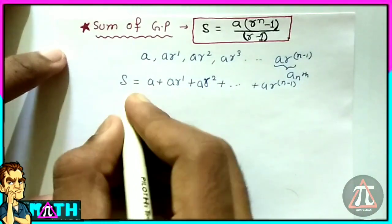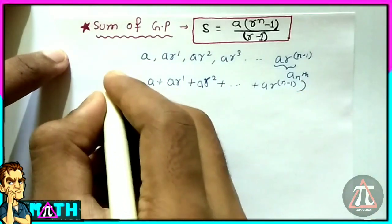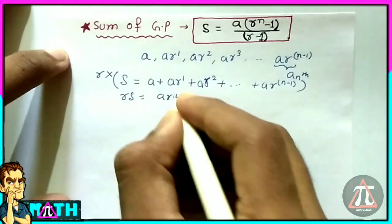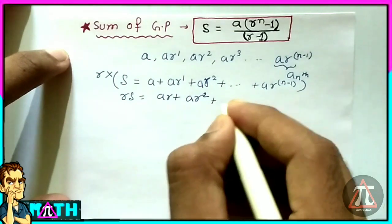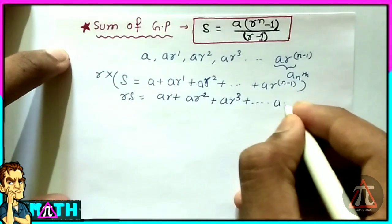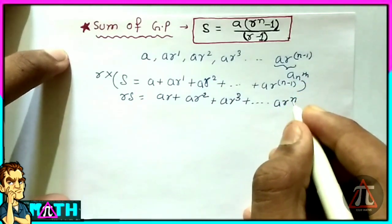When you multiply the whole equation by r, you get rS is equal to ar + ar to the power 2 when you multiply r with ar^1, and then ar^3, and then till ar to the power n when you multiply r with ar to the power (n-1).